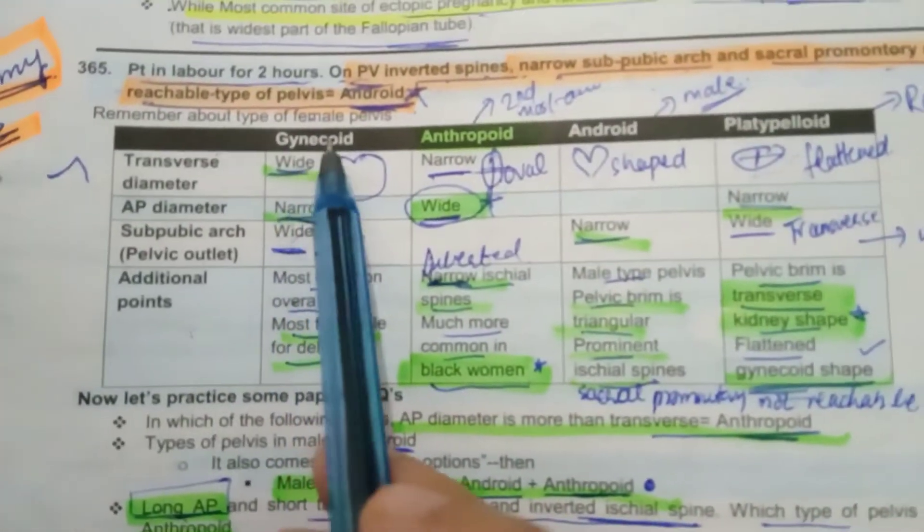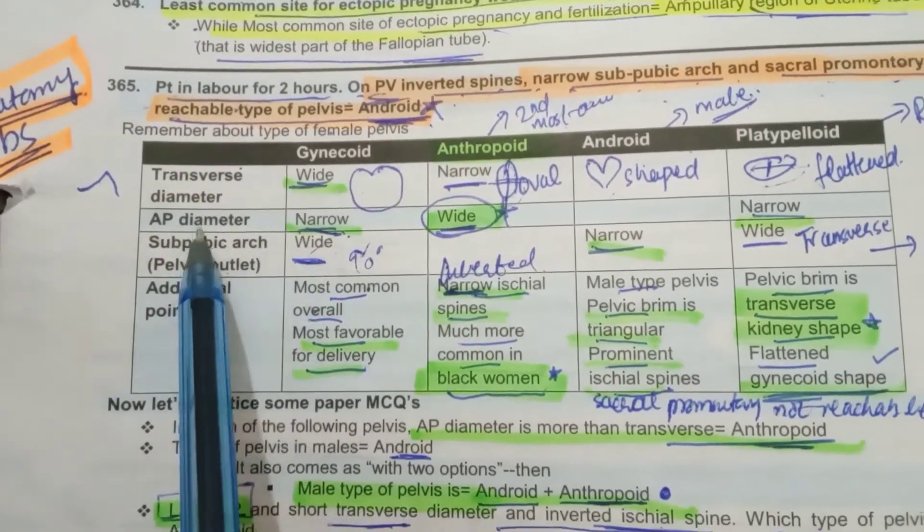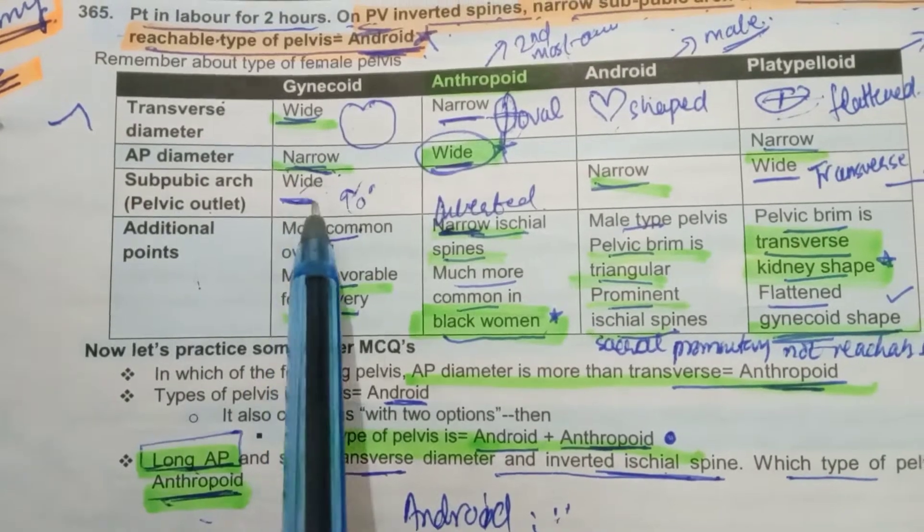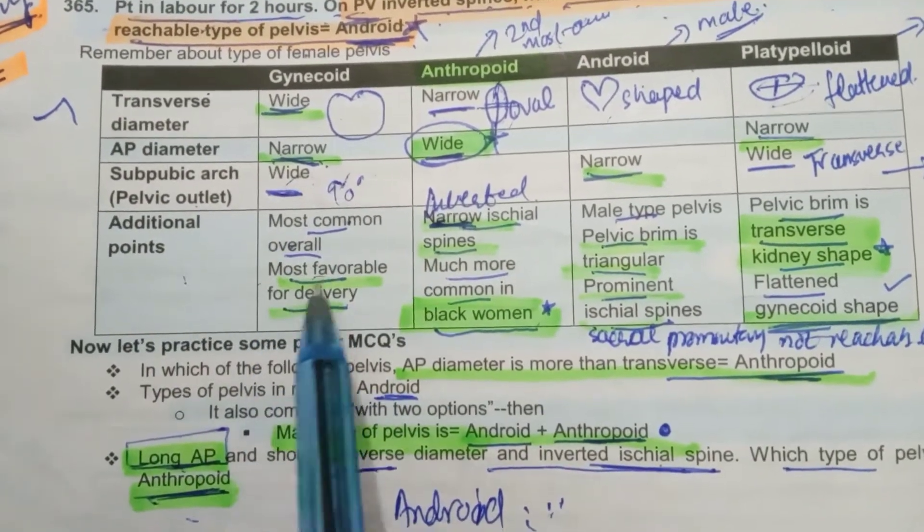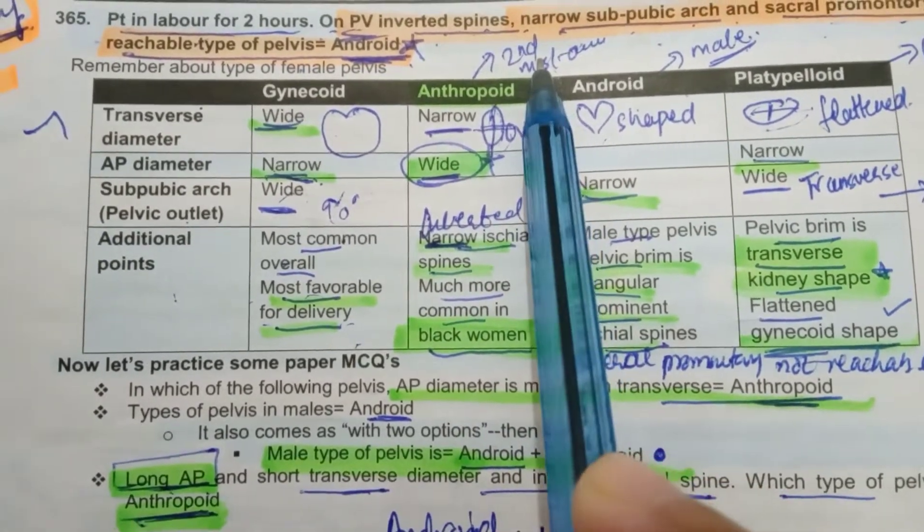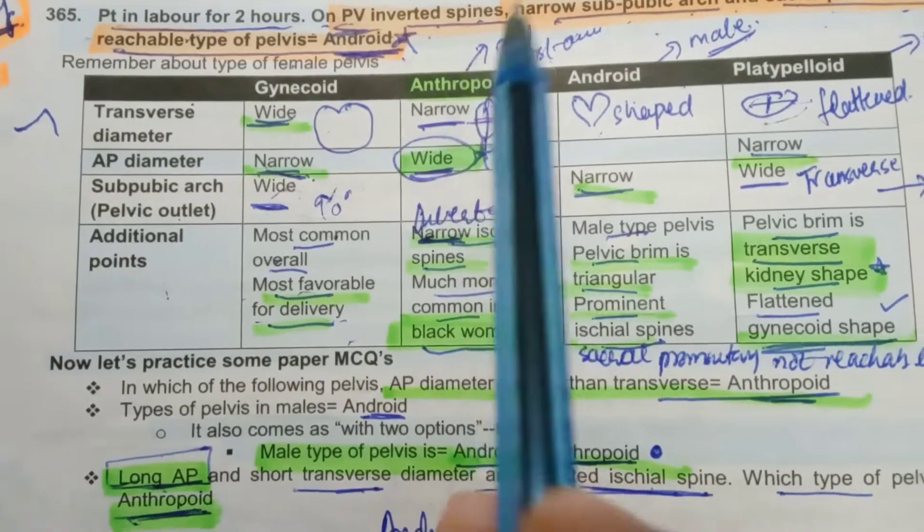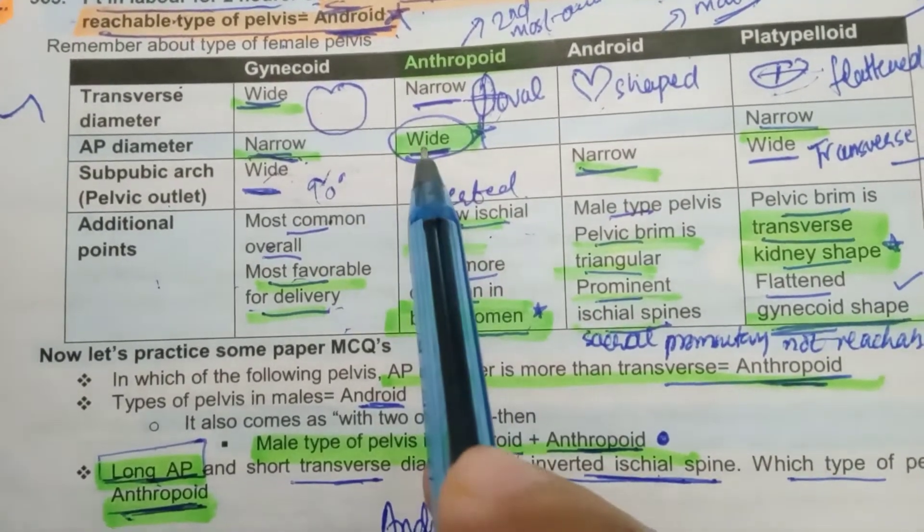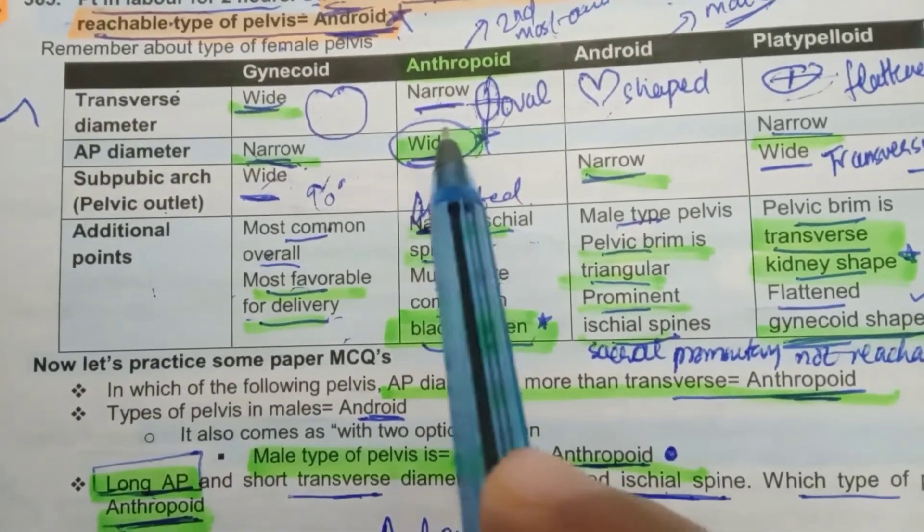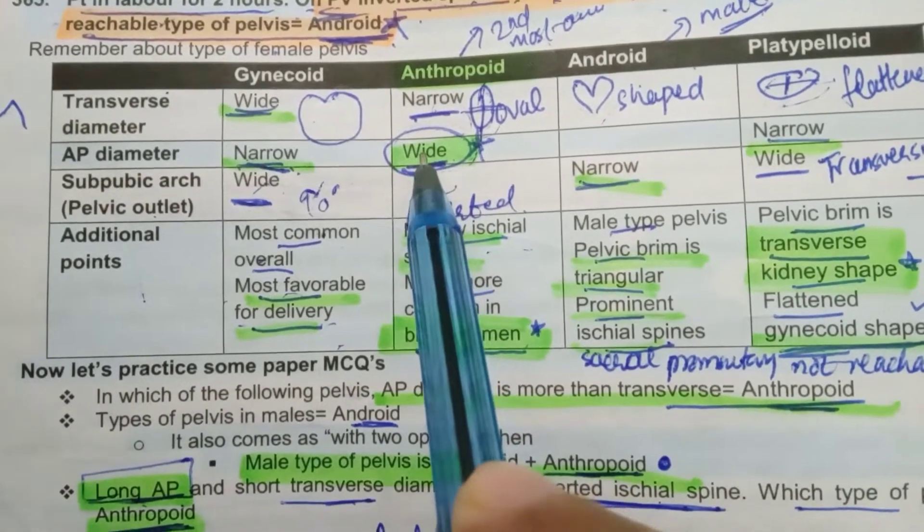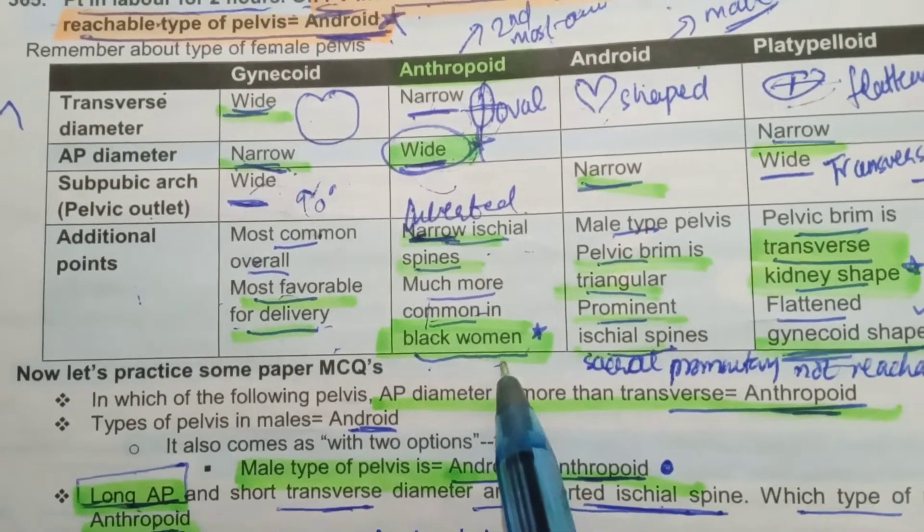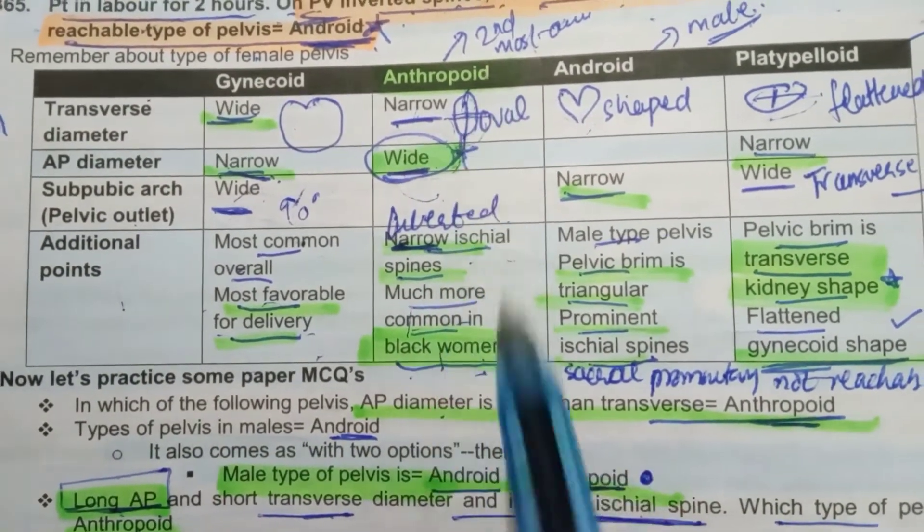Getting back to this table: Gynecoid transverse diameter is wide, whereas anterior posterior diameter is narrow as compared to the transverse. It is not narrow overall. Subpubic arch is wide, that is 90 degrees. Most common overall, most favorable delivery. Anthropoid oval - second most common in non-white females and third most common in white females. Inverted or narrow ischial spines. The transverse diameter is narrow. AP diameter is wider than the transverse diameter. And this is the only type of pelvis where AP diameter is wider than the transverse. Much more common in black women. Anthropoid or non-white or black women, it is more common, second most common.